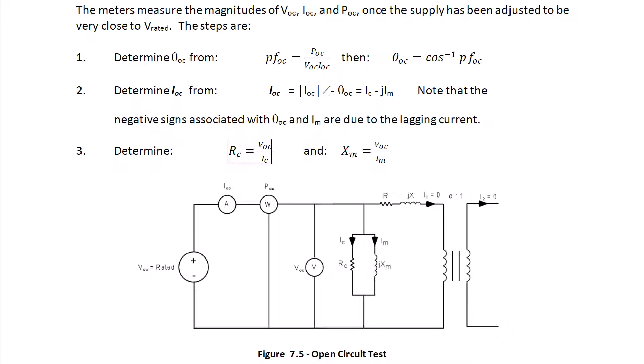Determine theta OC from PFOC, which equals POC over VOC IOC, and theta OC is the arc cosine of the power factor. Then determine IOC as the magnitude of IOC at the angle negative theta OC, which is IC minus jIM. Note that the negative signs associated with theta OC and IM are due to the lagging current. And then step three is to determine RC, which equals VOC over IC, and XM, which equals VOC over IM.